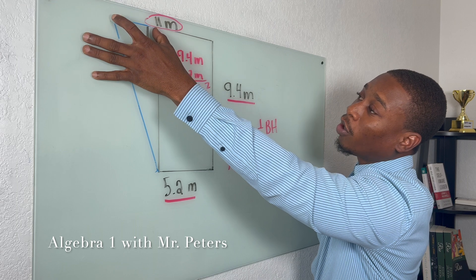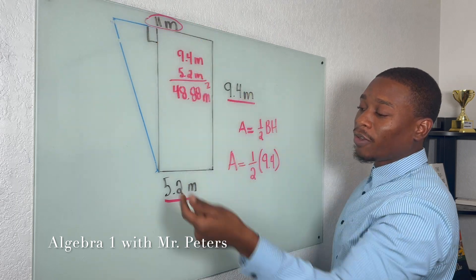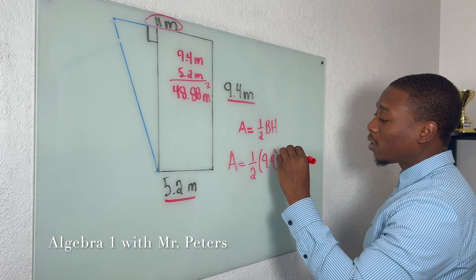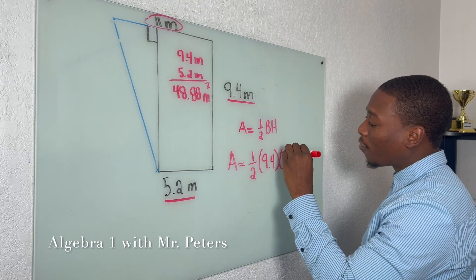To find this small area right here, we're going to do 11 minus 5.2. And once we do, that is going to give us a base of 5.8.